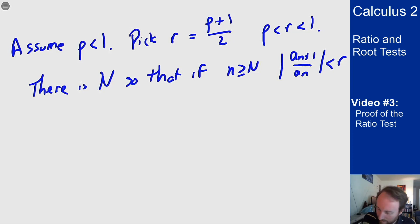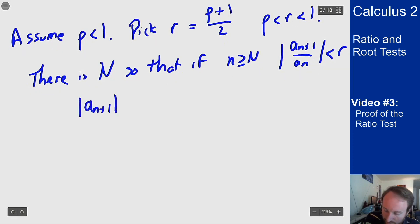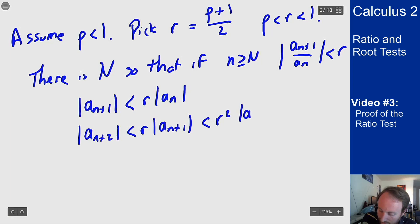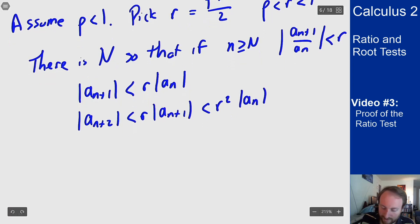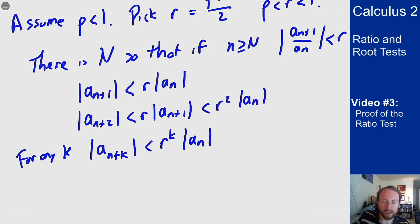What does this mean? This means that |a_(n+1)| is less than r times |a_n| because that ratio is less than r. This also holds for every n bigger than this point, so we also then know that |a_(n+2)| is less than r times |a_(n+1)|, but by our above statement that's less than r² times |a_n|. You can keep applying this over and over again to get that for any k, |a_(n+k)| is less than r^k times |a_n|, which means I can bound the a_(n+k) terms by this geometric series.